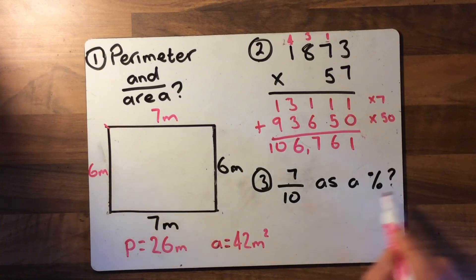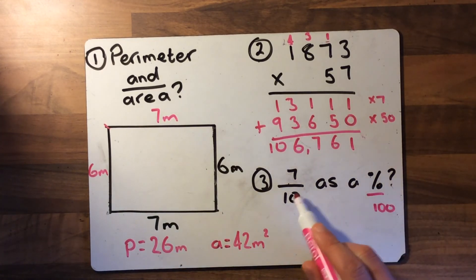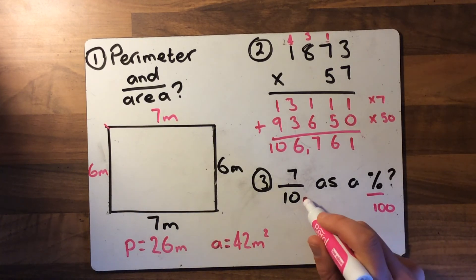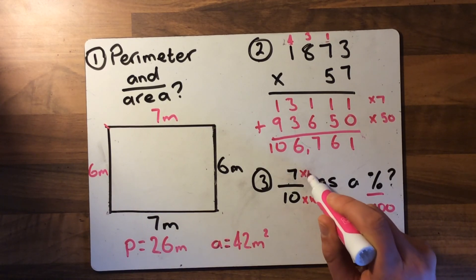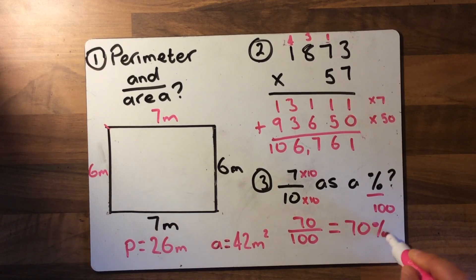Right, looking at this one now, number three, seven tenths as a percentage. Remembering that percentage, percent is out of 100. So what we want to do is we want to change this denominator into 100. What do I have to do to 10? To turn it into 100, I have to times it by 10. So I need to do the same to the numerator. So it's still an equivalent fraction but the denominator is 100. So we know that the denominator will be 100. Seven times 10 is 70. So 70 becomes the percentage. 70 percent. Okay, thanks a lot Year 6, and now we will move on to our lesson looking at area.